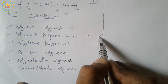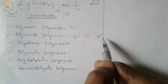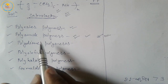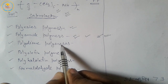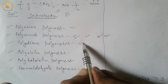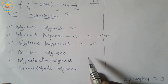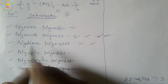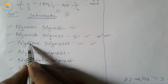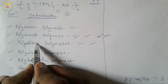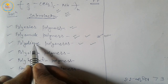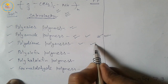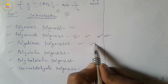Nylon 2-Nylon 6 is a biodegradable polyamide. Next, polydiene polymers — neoprene and polyisoprene. In their monomers, two double bonds are present, so these are called polydiene polymers.